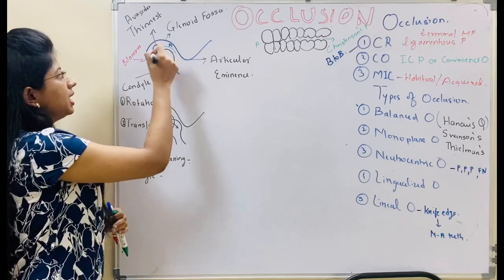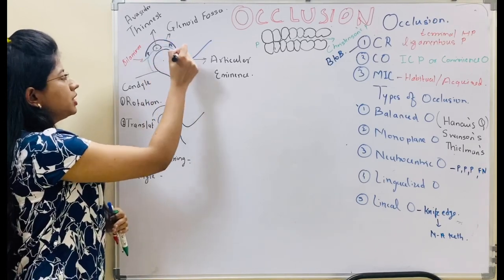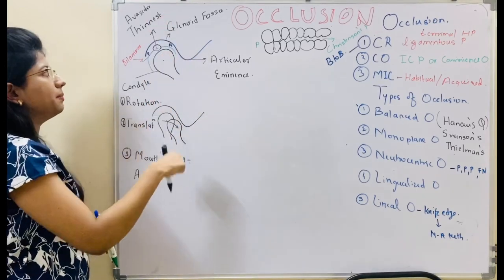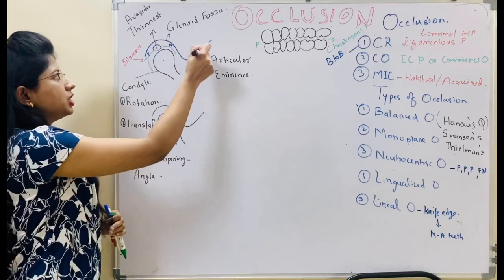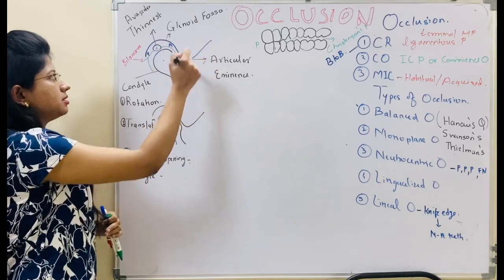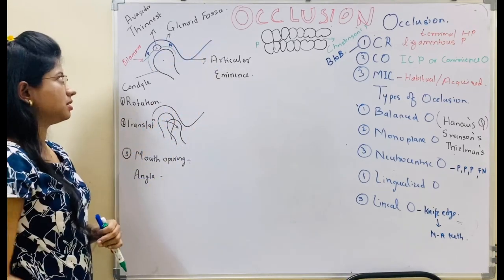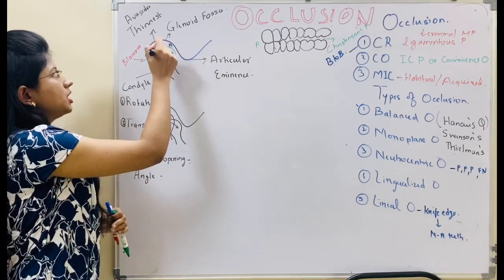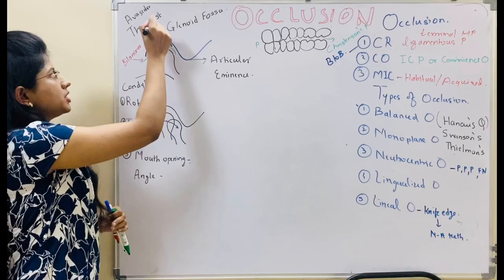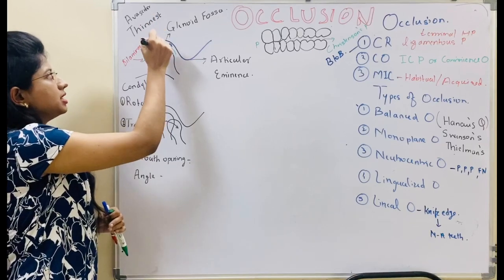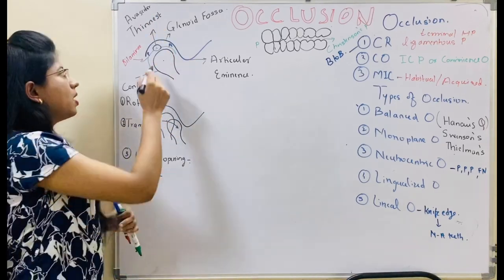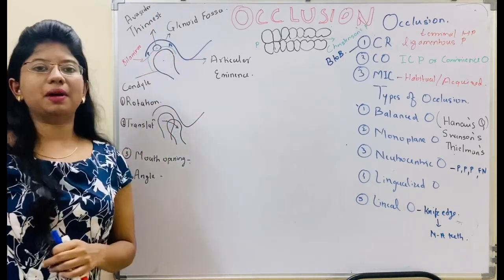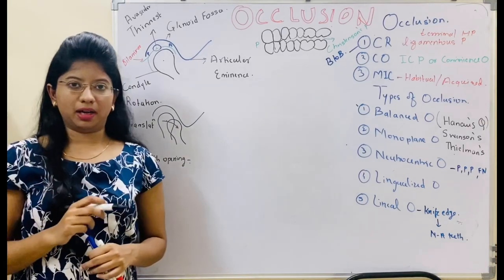This is your condyle. This is the glenoid fossa connecting to the temporal bone, and this is connecting to the mandible. There is articular eminence. This is the articular disc. The central part is avascular and is the thinnest part of the articular disc, while the posterior as well as the anterior part have blood supply.